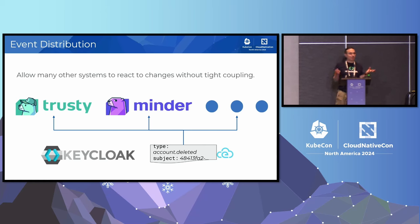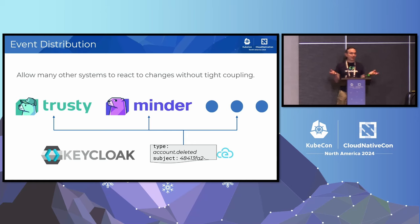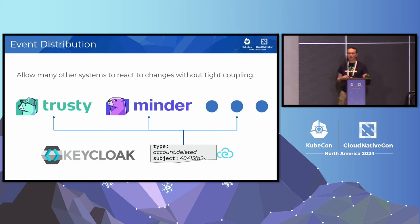The first case is event distribution. Sometimes something happens and you want lots of your software to know about it, but you don't want to tightly couple things together. StackLock uses KeyCloak, which is an identity provider, to create identities people can use across different products. Sometimes people say they want to delete their account, and GDPR says we have to delete all that data. But we don't want to teach KeyCloak about all the different services we have — that's where event distribution comes in.